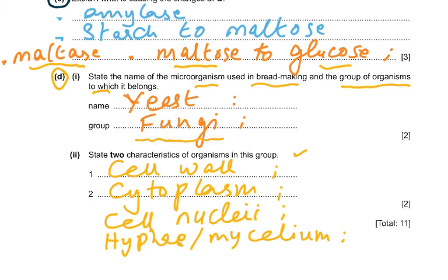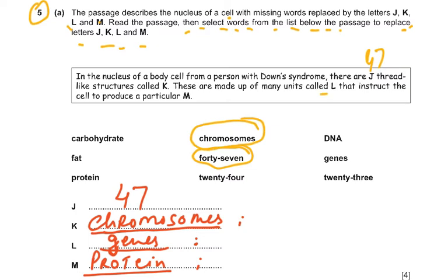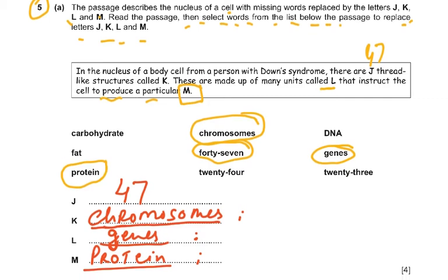Question 5A: a passage about a cell nucleus has missing words J, K, L, and M. In the nucleus of a body cell from a person with Down syndrome there are J (47) thread-like structures called K (chromosomes). These are made of many units called L (genes) — proteins that instruct the cell to produce a particular M (protein).